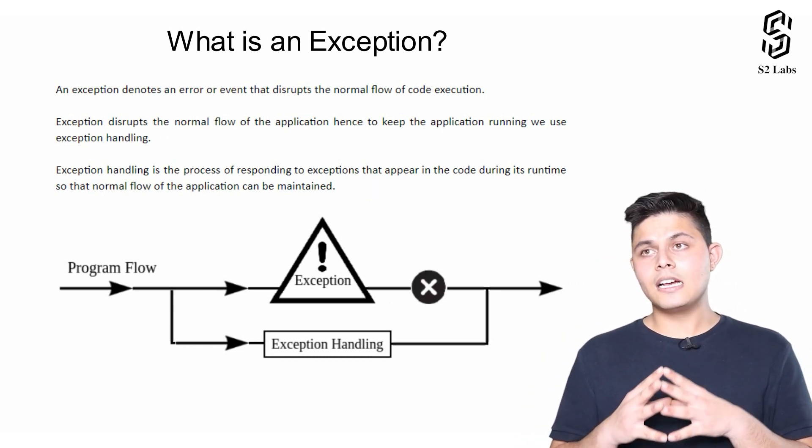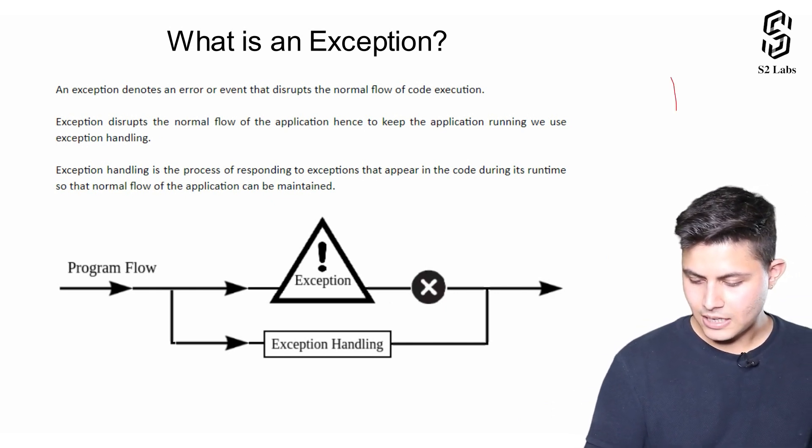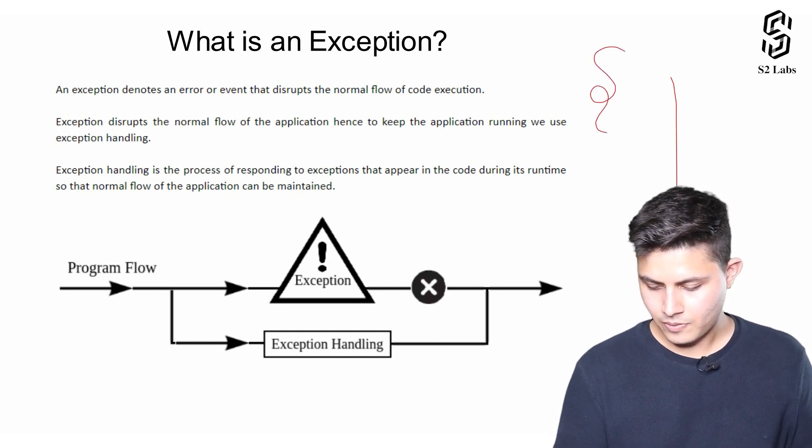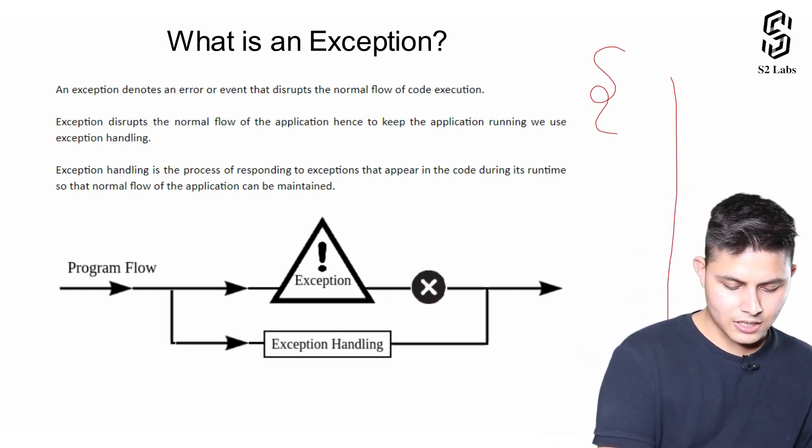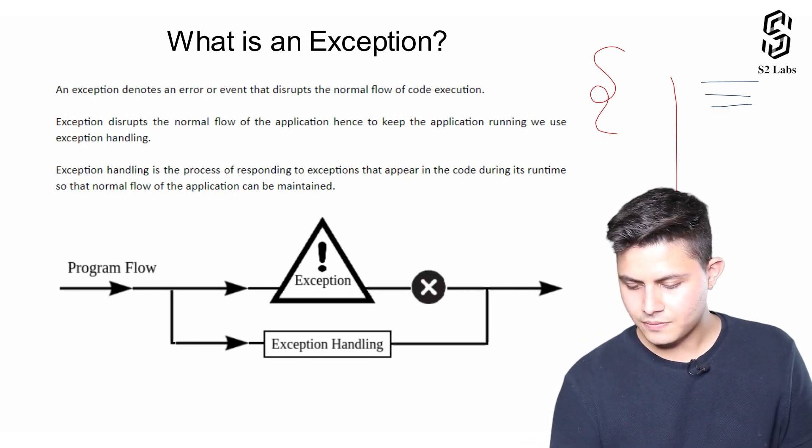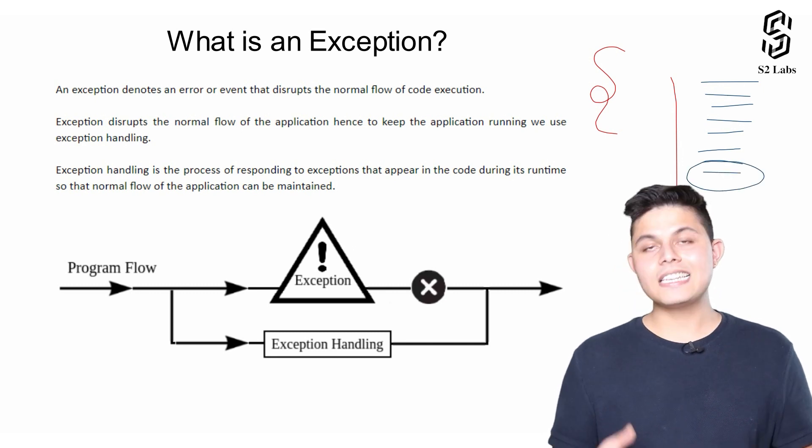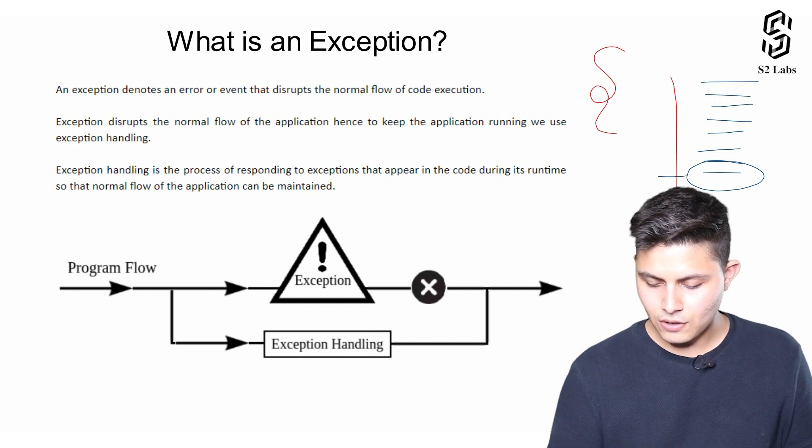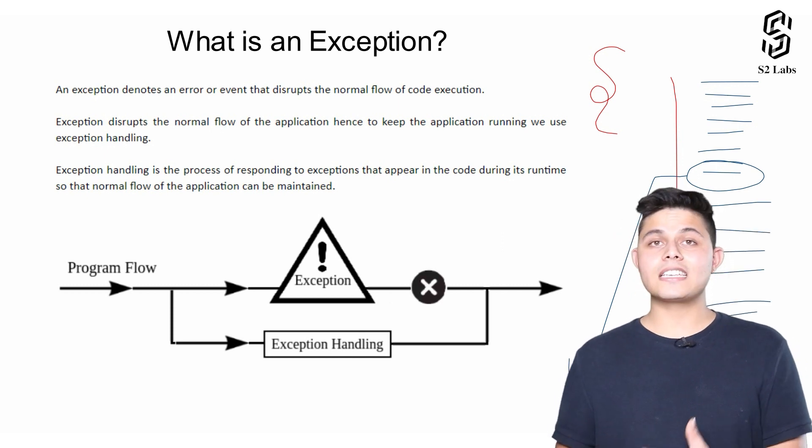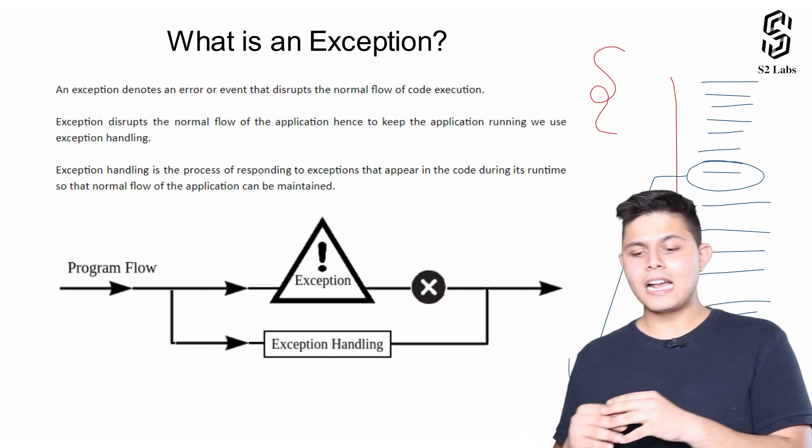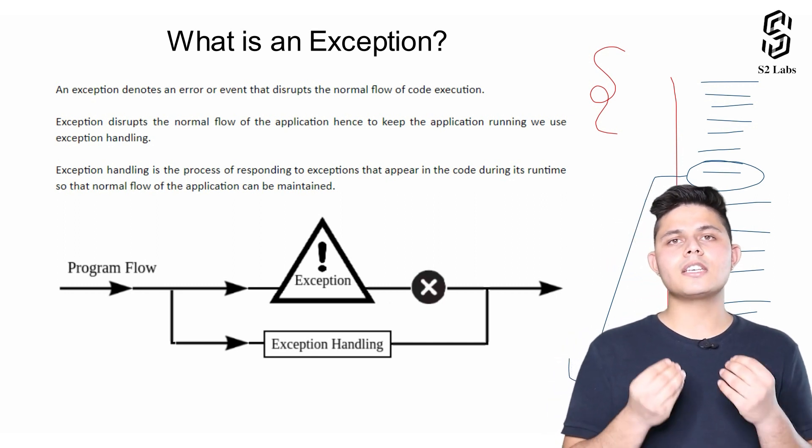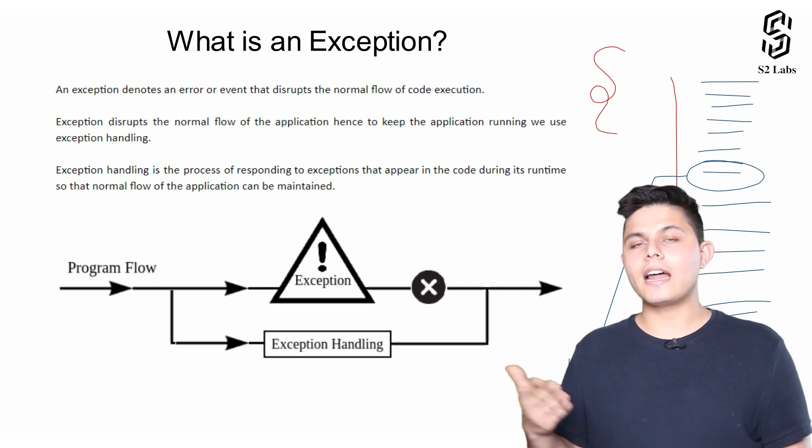With the help of this diagram, let's understand what exception handling means. This is the code that we need to execute. The runtime will execute the lines written here, and in this particular line, let's say there's an exception that occurred. This will halt the execution and all the rest of the lines after it will not get executed. This is something we need to handle with the concepts given to us.